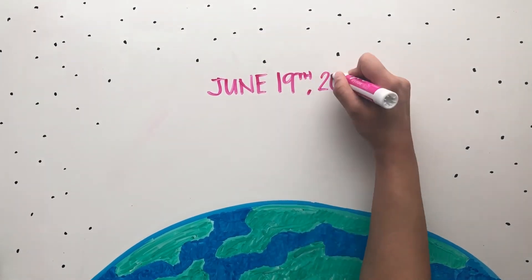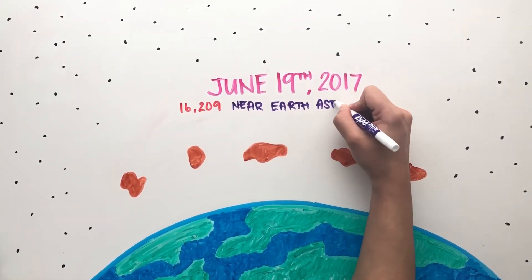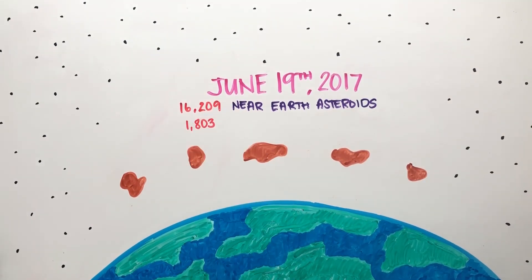As of June 19, 2017, 16,209 near-Earth asteroids have been discovered with nearly 1,800 classified as potentially hazardous asteroids.